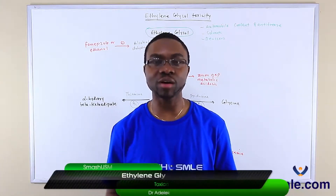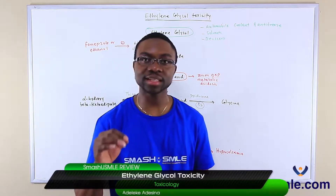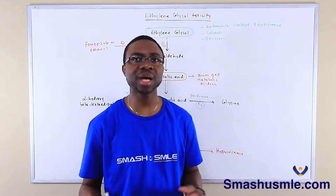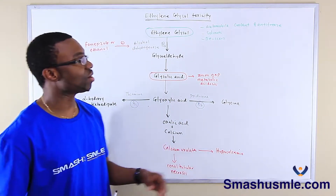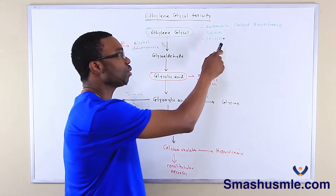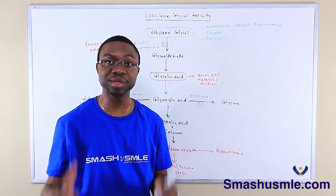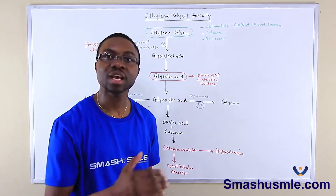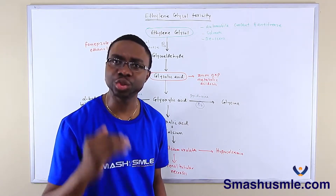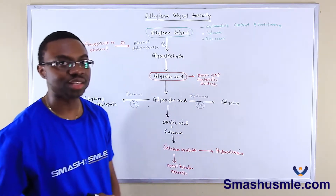We shall be talking about ethylene glycol toxicity. A lot of students understand the causes of acidosis, but one of the common causes of metabolic acidosis is ethylene glycol. Ethylene glycol can be found in automobile coolants or antifreeze — these are patients that are alcohol abusers who start to drink antifreeze. Please do not ever do that. It can also be found in solvents or de-icers.